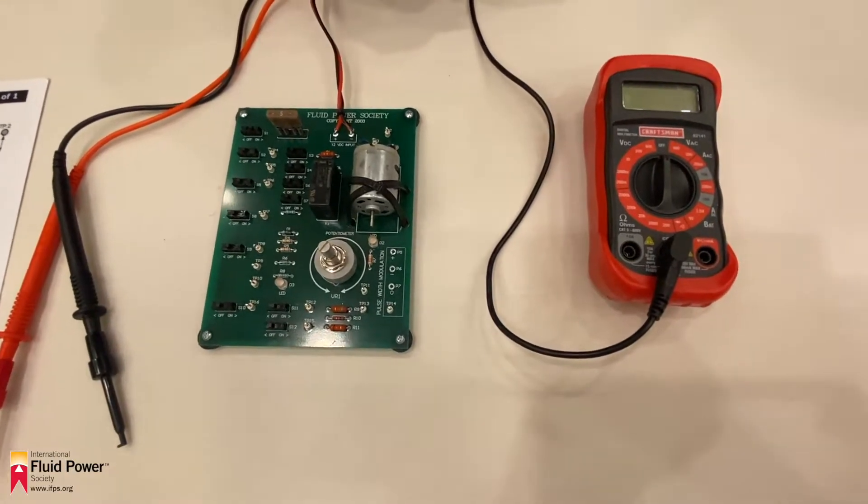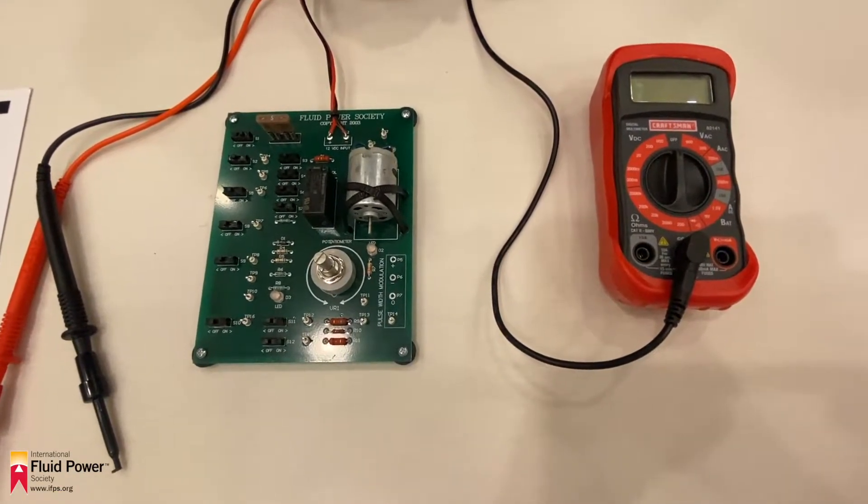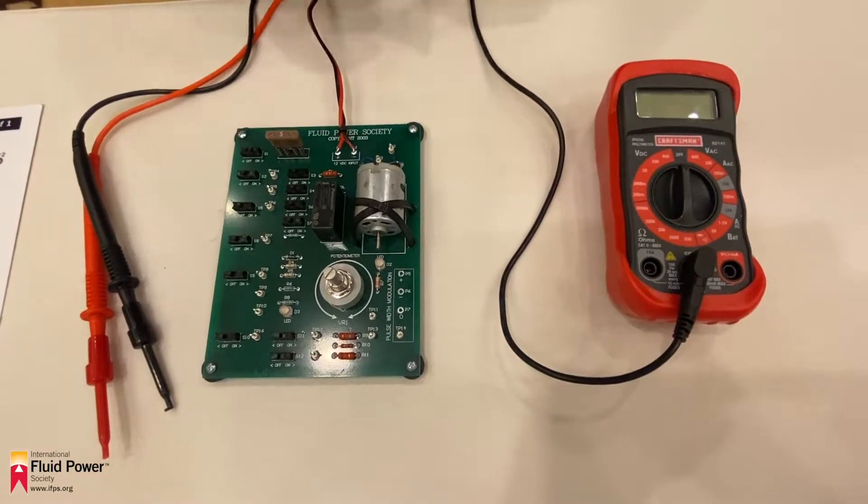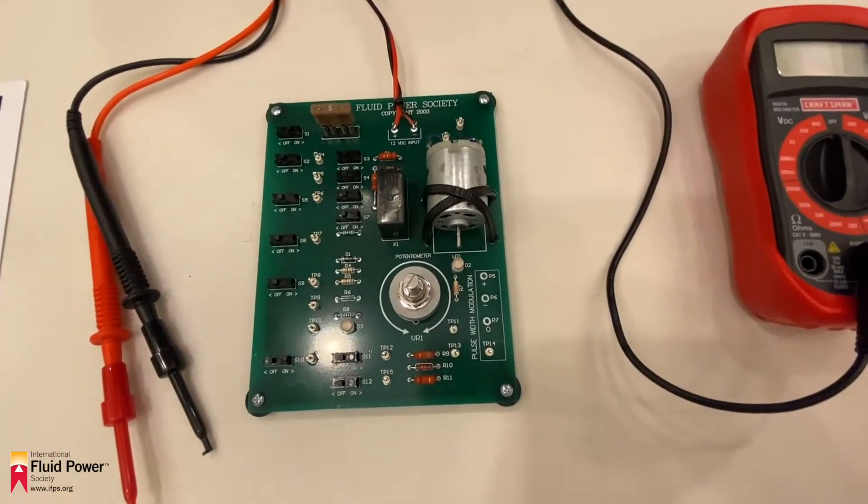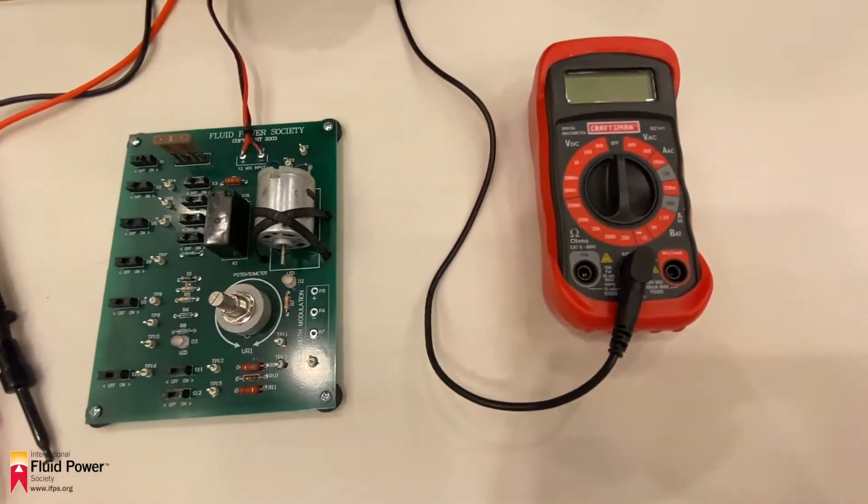Checking amperage requires the amp meter be placed into the circuit so that the current flows through it. The only way to do this with the circuit board is to bridge a switch with the meter.